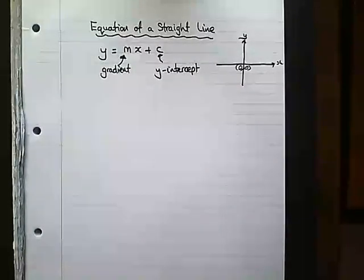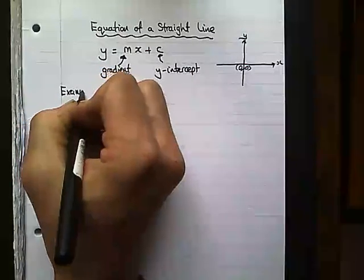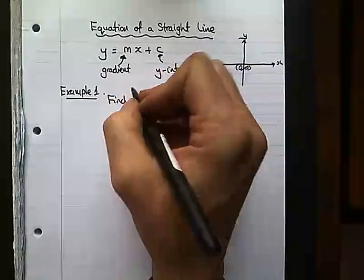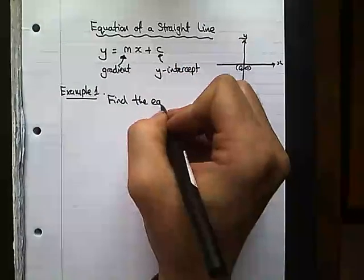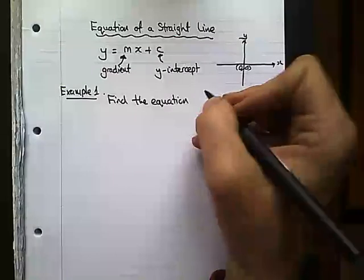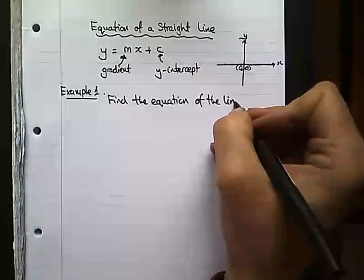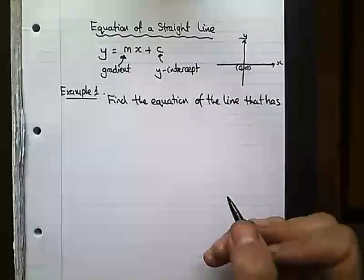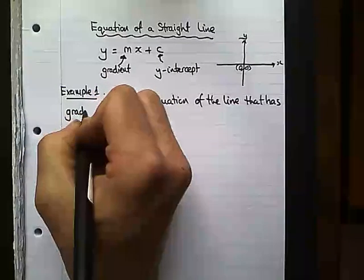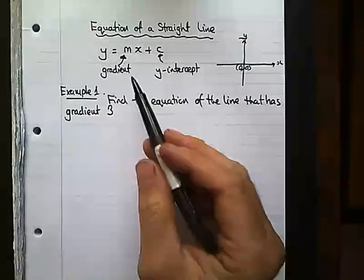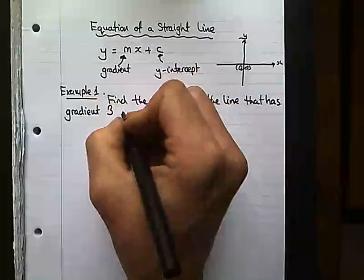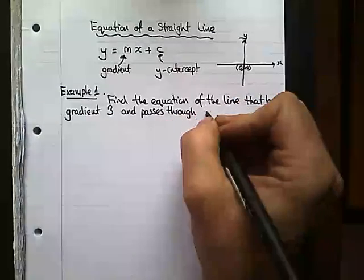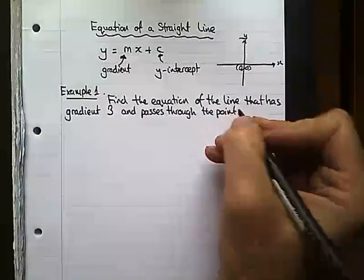So here's the first example. Example one. Find the equation of the line that has a gradient of 3, so they've told us what our m value is, and passes through the point (10, 25).